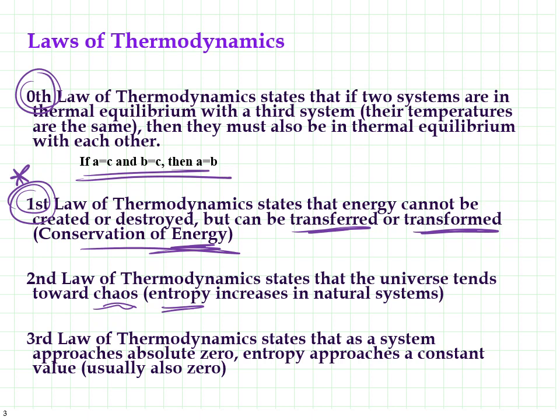Basically, giant molecules do not like to be stuck together. It's more stable for them to fall apart into littler pieces. The third law of thermodynamics — we'll talk about this more in our next unit when we talk about Kelvin as a measure of temperature and absolute zero. It's this idea that if we approach absolute zero, which means there's no more kinetic energy, then entropy — this order — is going to have to stay the same. It can't change anymore.